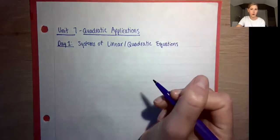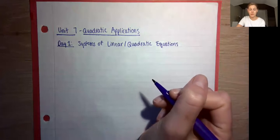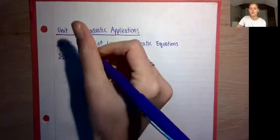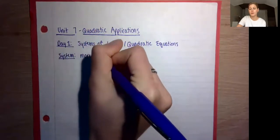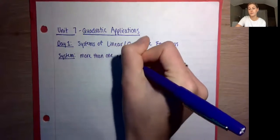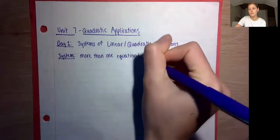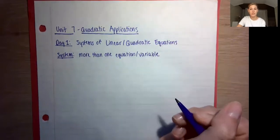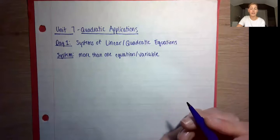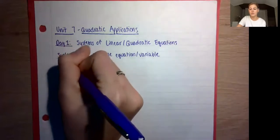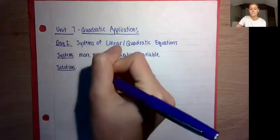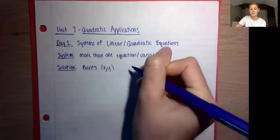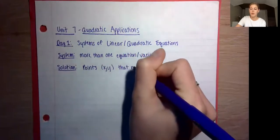You guys have done systems before, so let's just review some vocabulary for this unit. A system is where we're talking about more than one equation or variable. With these equations and variables, we're looking at where they intersect, and where they intersect is called our solution. So our solution is any and all points, usually two-dimensional x, y, that make both equations true.